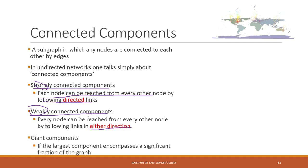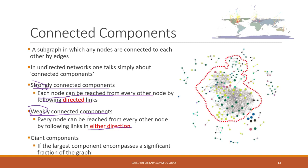Giant components simply refers to those subgraphs that have a lot of members. For example, in this example we have several connected components, but we see a very big subgraph — shown here in red — where all the members are connected with each other. That is what we call the giant connected component.